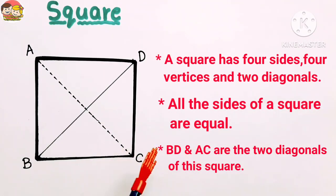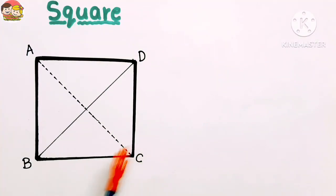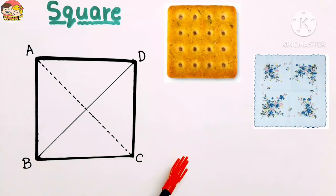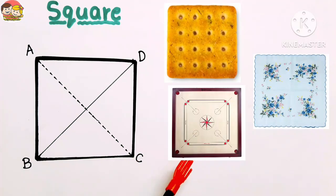Now let's see some examples of square shapes in real life, such as biscuit, handkerchief, carom board, etc.